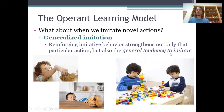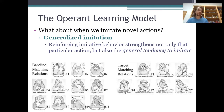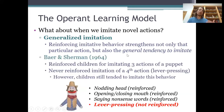Generalized imitation is precisely what the researchers did not find in the research I told you about earlier. Those kids got reinforced for imitating baseline behaviors, but that imitation did not generalize to new target behaviors they'd never been reinforced for imitating. However, the conclusion from that research was not that generalized imitation doesn't exist — just that it's not innate, it's learned. And consistent with that idea, older kids have demonstrated the ability to exhibit generalized imitation. I told you about some of that research last week too.